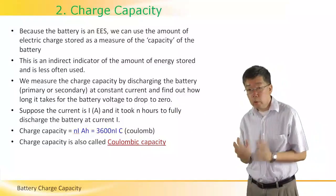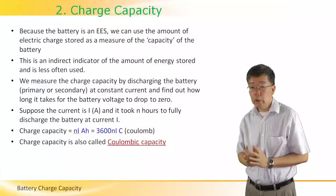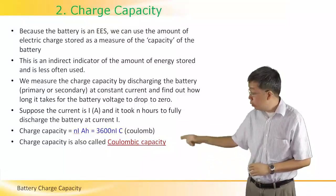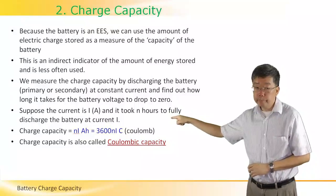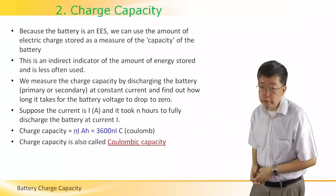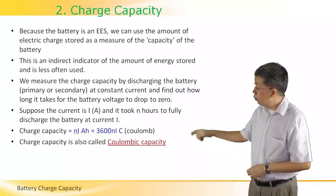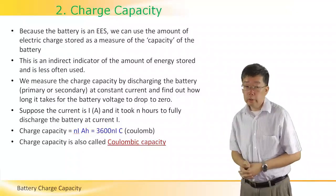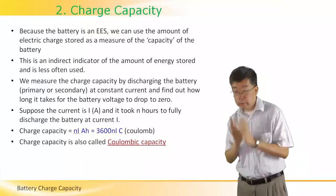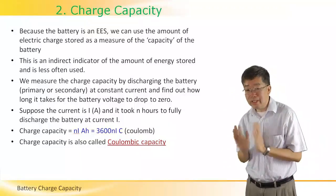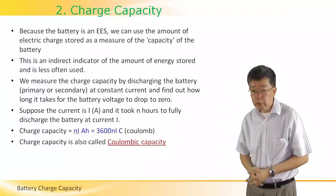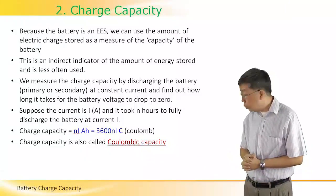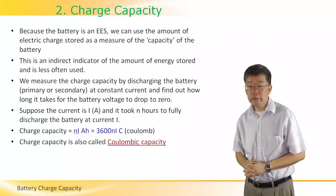We simply multiply the current in amperes by the amount of time, usually in hours, and we get the quantity called the charge capacity, measured in units of amp-hours. To convert to coulombs, multiply by 3600, since there are 3600 seconds per hour. The charge capacity is also known as the coulombic capacity.